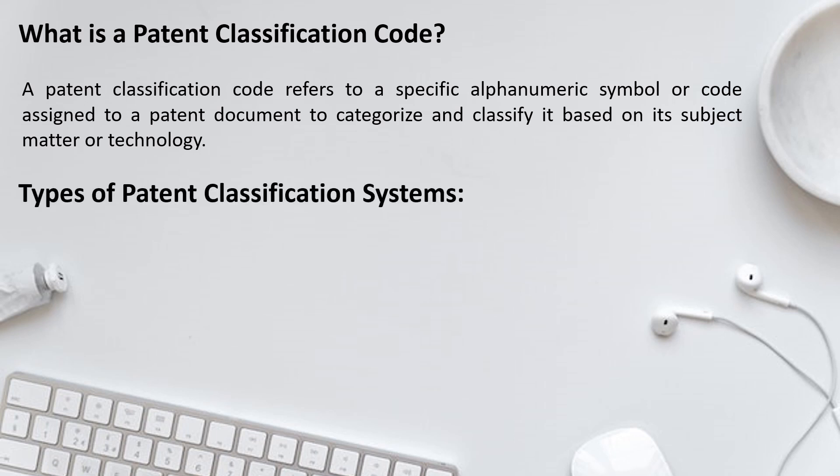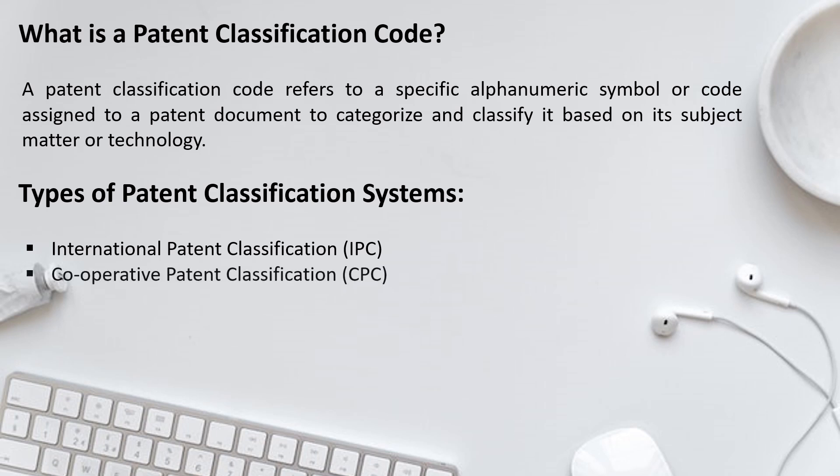There are many kinds of patent classification systems available, including country-specific systems like the US patent classification. However, two types are majorly used in the patent field: the first is the International Patent Classification system, commonly known as IPC, and the second is the Cooperative Patent Classification, commonly known as CPC. Let's check each one in the next slides.